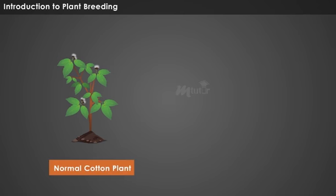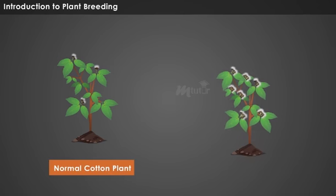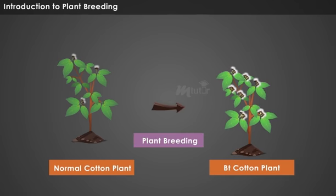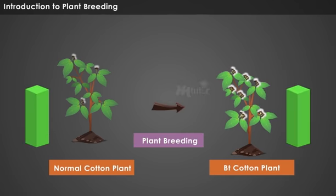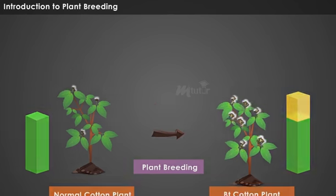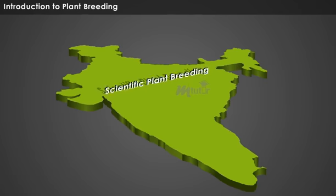The concept of modifying the characteristics of a plant to produce new crop varieties is called plant breeding. For instance, cotton crop is modified to yield B.T. cotton through certain plant breeding mechanisms. In India, scientific plant breeding technique was introduced in the beginning of the 20th century.